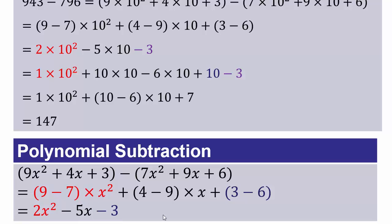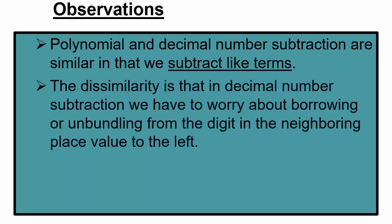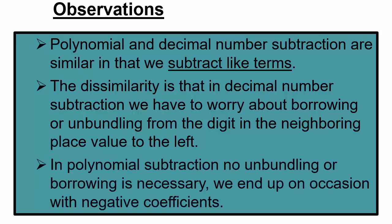So what observations have we made about subtraction? Polynomial and decimal number subtractions are similar in that we subtract like terms. The key dissimilarity is that in decimal numbers we must borrow from a neighbor or unbundle to perform subtraction. In polynomial subtraction, we cannot borrow x² terms to make x terms, so we may end up with negative coefficients.